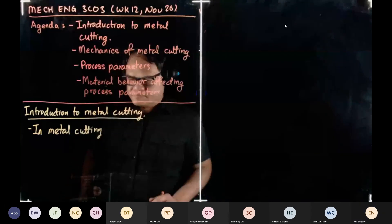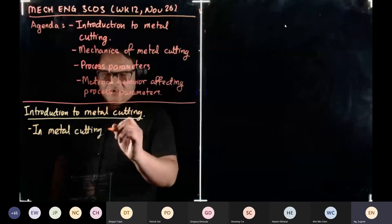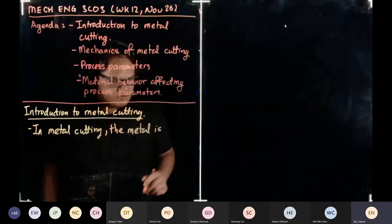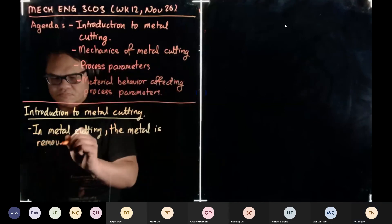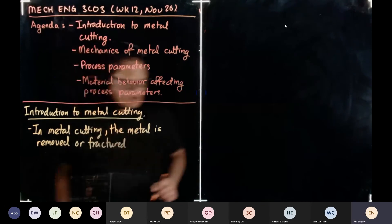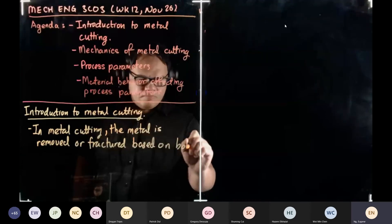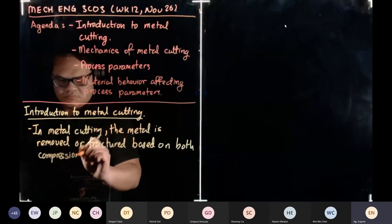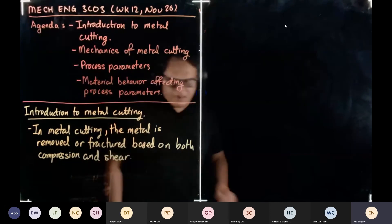Can you hear me now? Thank you for letting me know. So in metal cutting, the material is removed or fractured based on both compression and shear stresses.